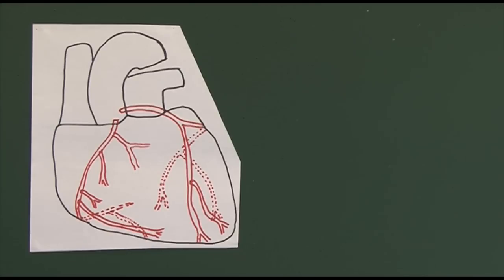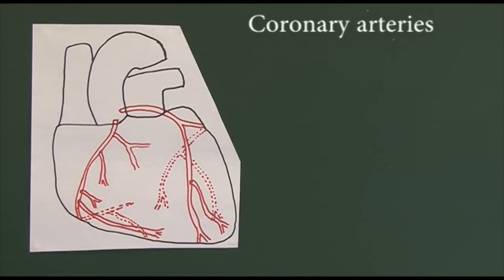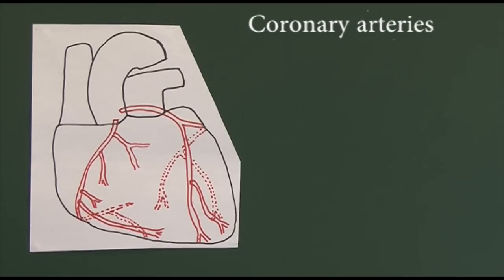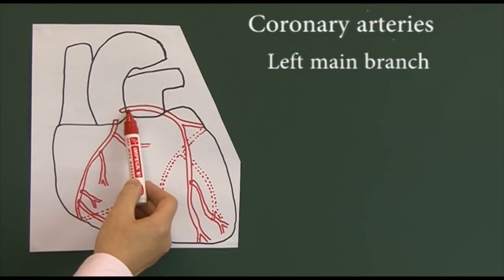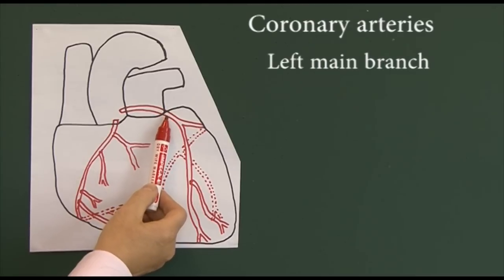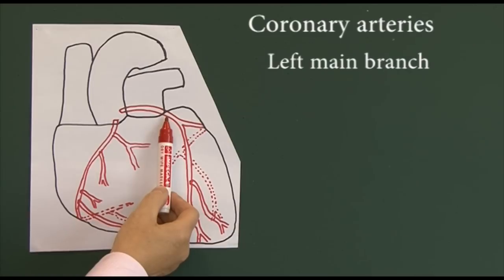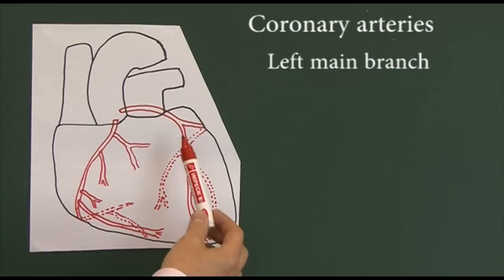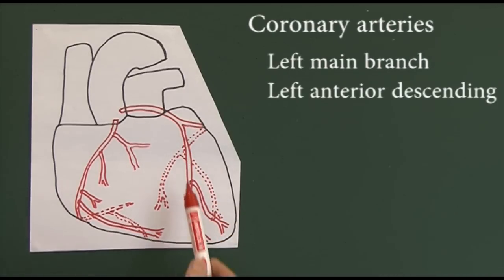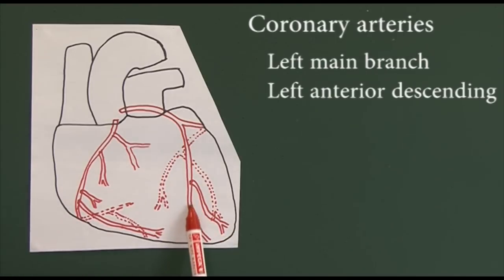The first two arteries that leave the aorta are the coronary arteries, and it's the coronary arteries that are taking the blood to the areas of the myocardium. We see there is a left coronary artery leaving the aorta, and the main branch goes down here — this is sometimes called the anterior interventricular branch, but most often it's simply called the left anterior descending artery, going down the front, anterior exactly as it says.